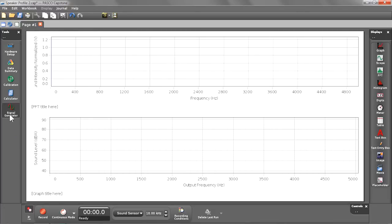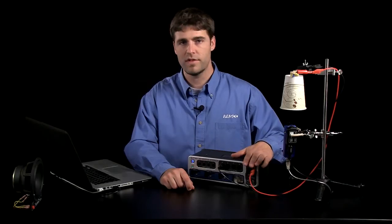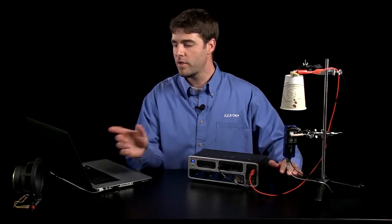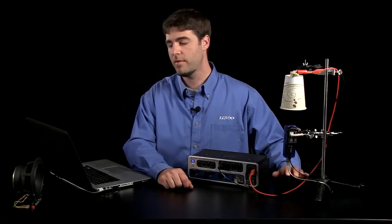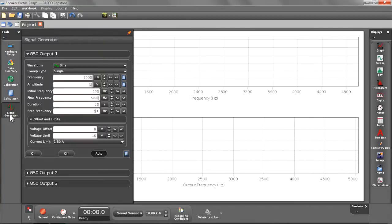As I mentioned, we'll be driving the speaker using the output function generator on the 850, so let me go ahead and explain the controls that I have set up already. As you can see, we'll be driving the speaker using a 1 volt sine wave, and we'll be sweeping through a band of frequencies starting at 100 Hertz and ending at 5 kilohertz. The sweep should take 20 seconds and the step frequency should be 0.1 Hertz.